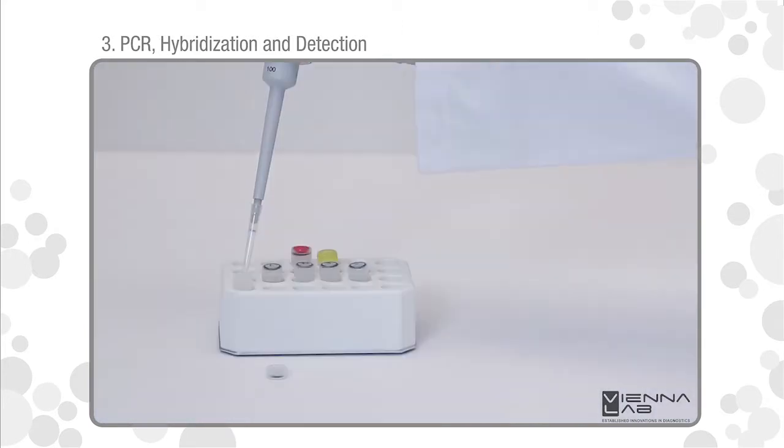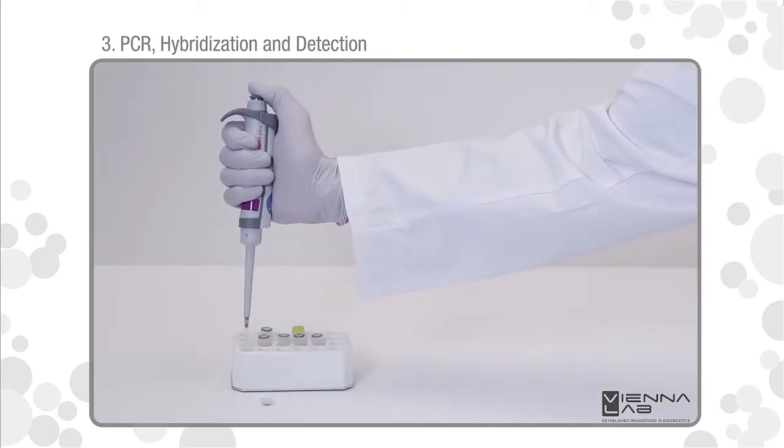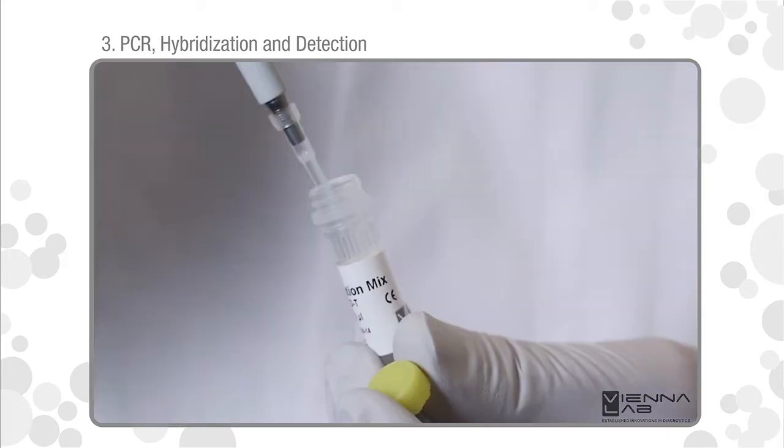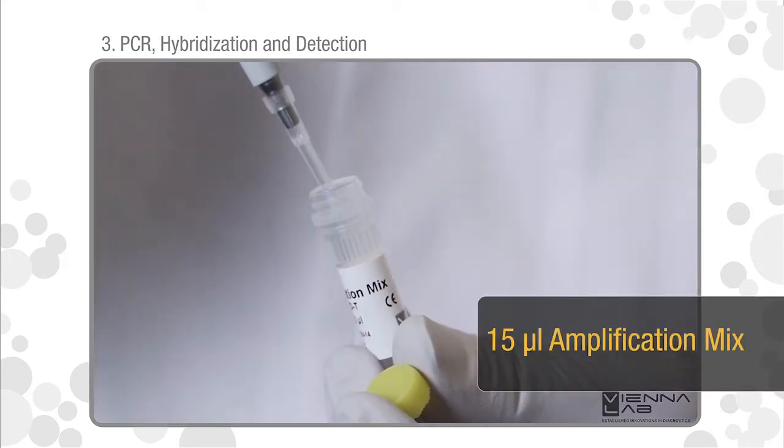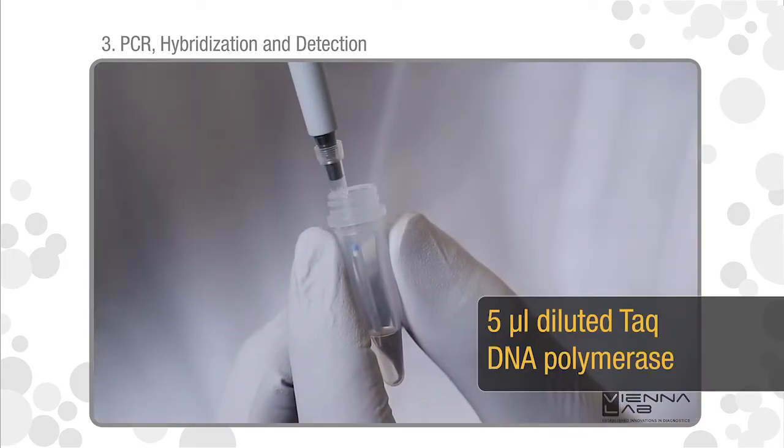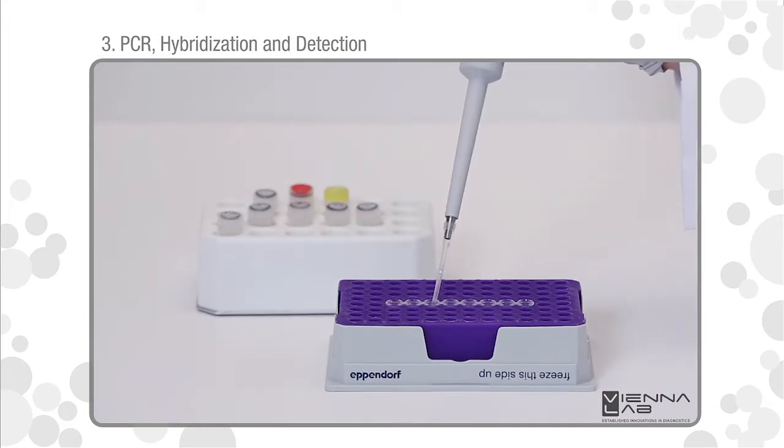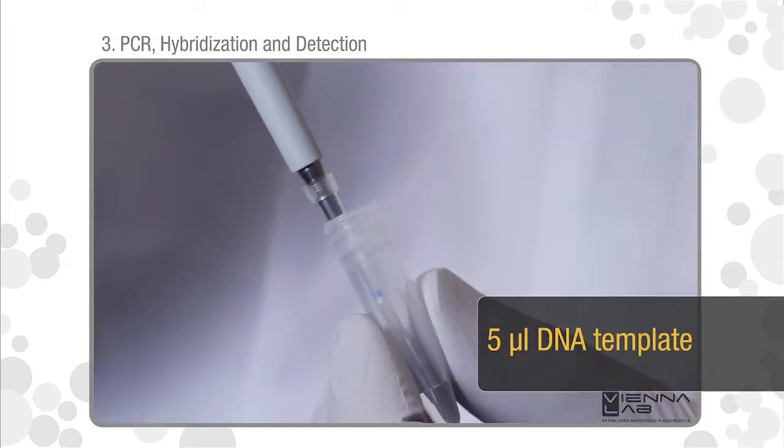Prepare a fresh working dilution of TAC DNA polymerase in TAC dilution buffer. For each sample, prepare a final PCR reaction mix in the cool block: 15 microliters amplification mix, 5 microliters diluted TAC DNA polymerase, 5 microliters DNA template.